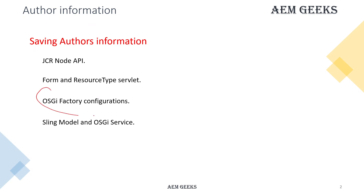This is very important. We have detailed tutorials available about the OSGI configuration and factory configuration. I will keep the link of those tutorials in the description, so please go back and check those. This is really important. We will also see how to write Sling models and OSGI services.